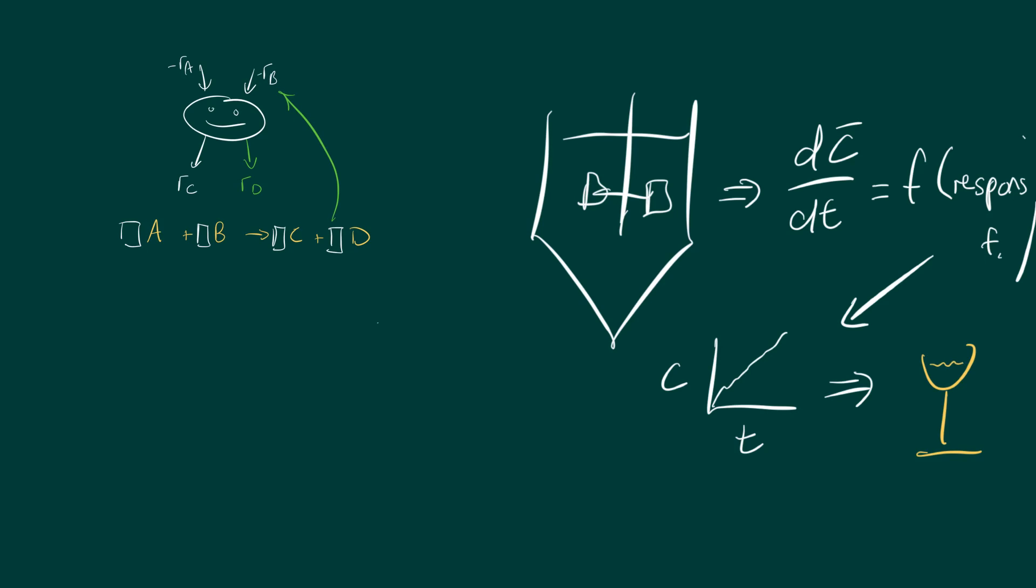Once we have all of this available, it's very easy to design, operate, and optimize. With these three things, we can make our process economical. These three things are linked to the economy of the process.